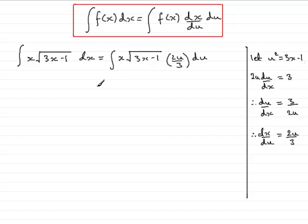So we need to change the variable totally over to u's. So the x, in the usual way we need to make x the subject from here. So we would have that x would equal u squared plus 1 divided by 3. So we have x equals u squared plus 1 all over 3.